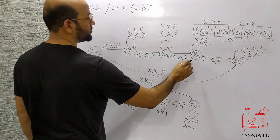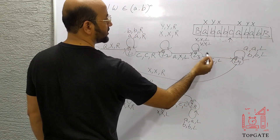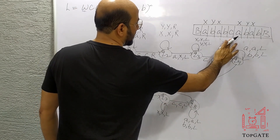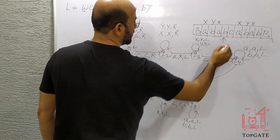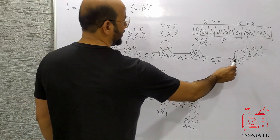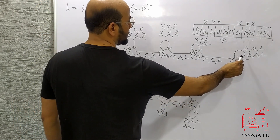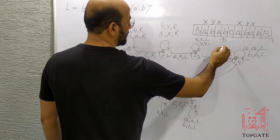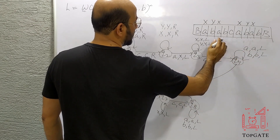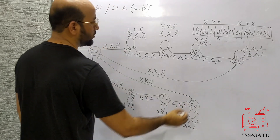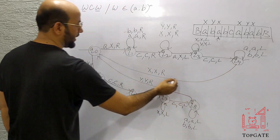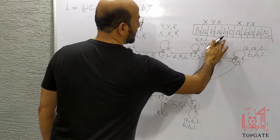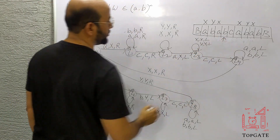At Q3 I also need moves for X and Y — so I take a self loop: X comma X comma L; Y comma Y comma L. All X's and Y's are skipped and the pointer will come to this C. The machine knows: if you find C at Q3 keep it as C and go left. This C is skipped and the pointer will come to B. All the A's and B's are skipped and the pointer comes to this X. Then X comma X comma R goes to Q0, and the pointer will now point to this B.